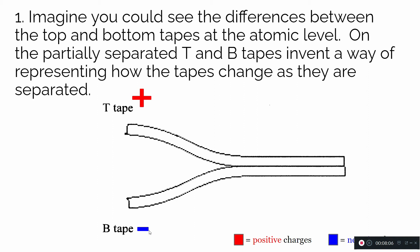There are electrons and protons in both the top tape and the bottom tape. What makes it act uncharged or neutral is that there's the same number of positive and negative charges. Since there's a nucleus in every atom, let's draw positive charges throughout — there are positive charges there no matter what. Now we need to decide where to put the electrons to explain why the combined tape is neutral, while the top tape when separated is positive and the bottom tape is negative.